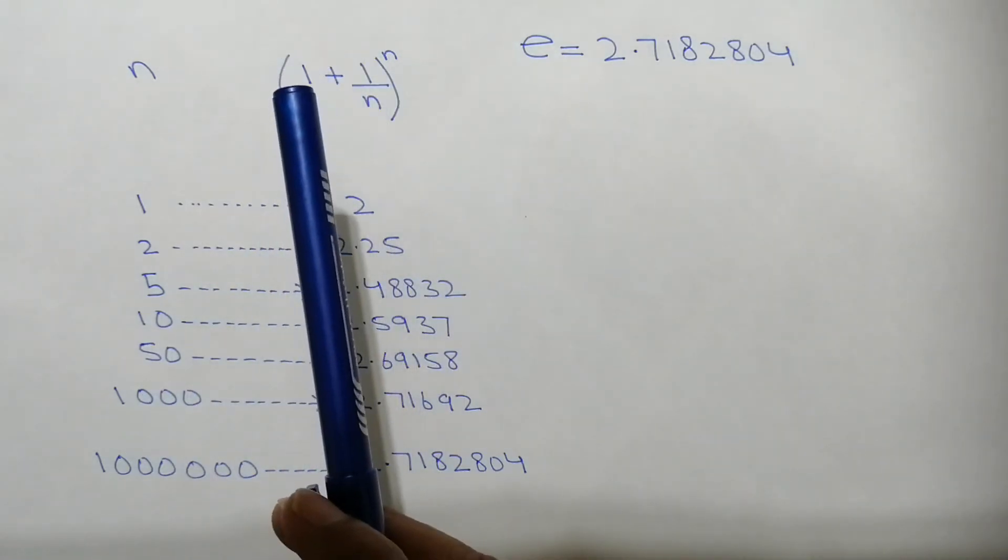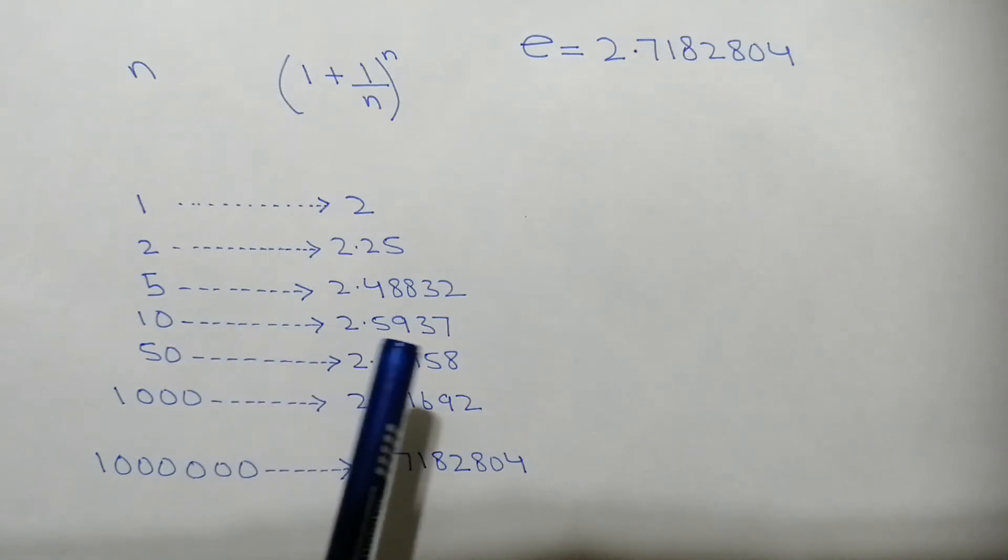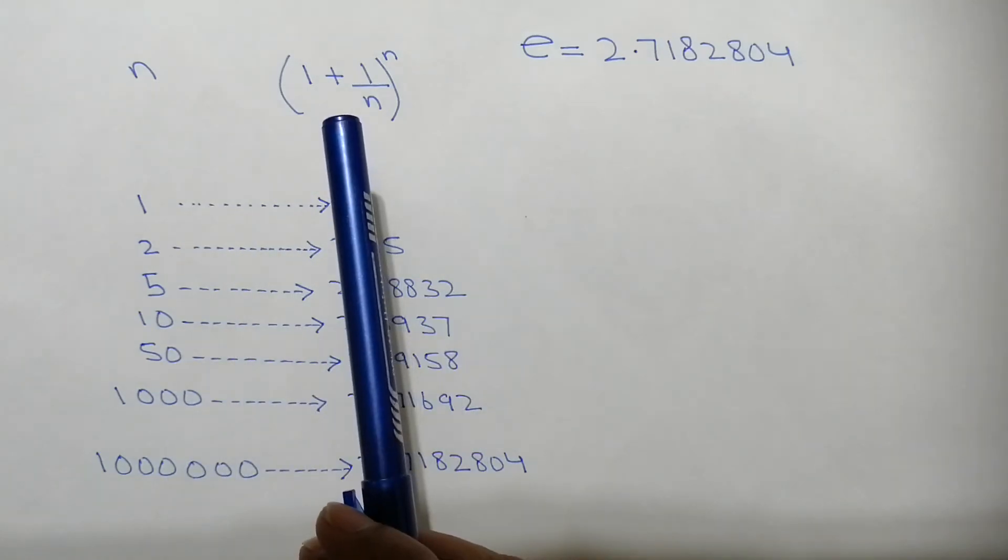after solving, the answer will be 2.5937. Now notice one thing: as we are gradually increasing the value of n, the answer is approaching closer to e.